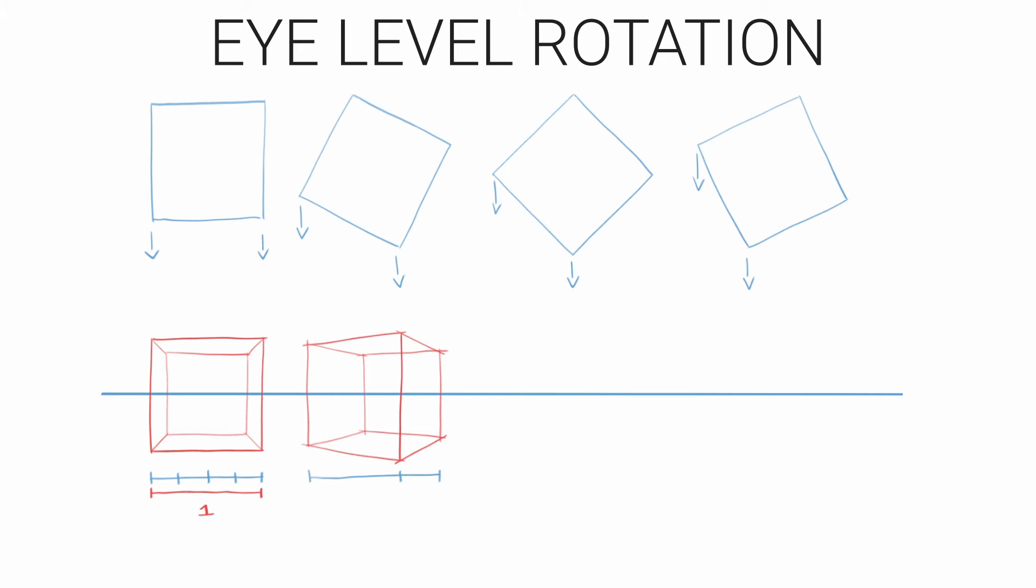On first rotation the front face goes from taking up four quarters to taking up three quarters with the remaining quarter revealing the side face. And then on second rotation the front face now takes up two quarters or half and the side face takes up a half as well. And then finally the third rotation we have one quarter for the front face and three quarters for the side face.